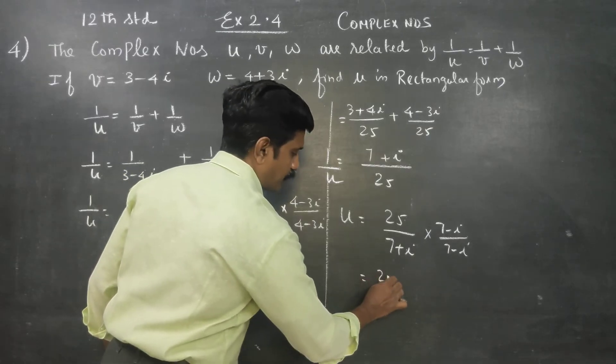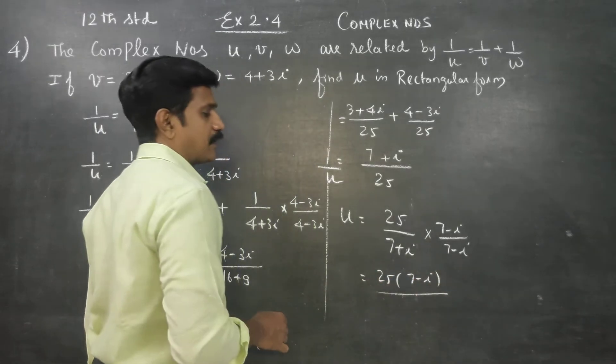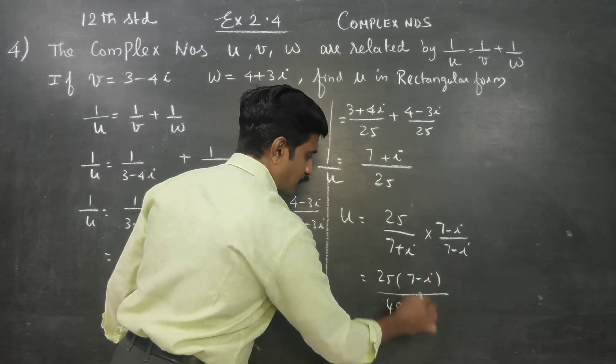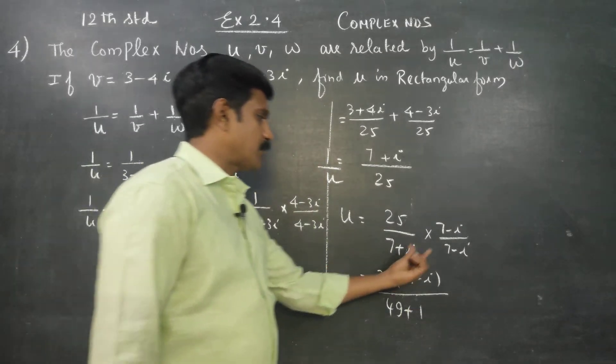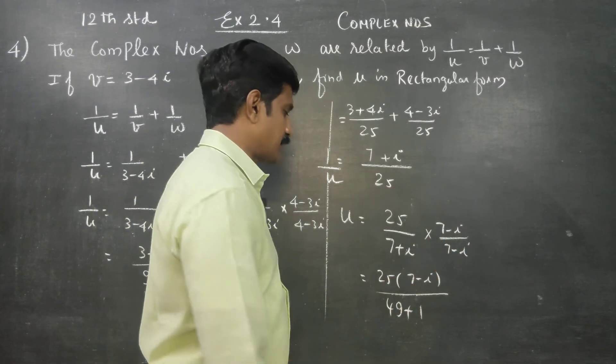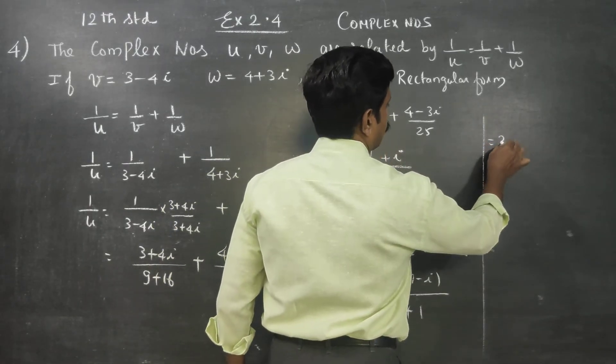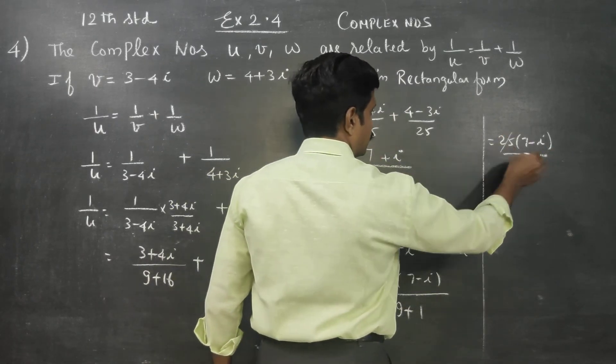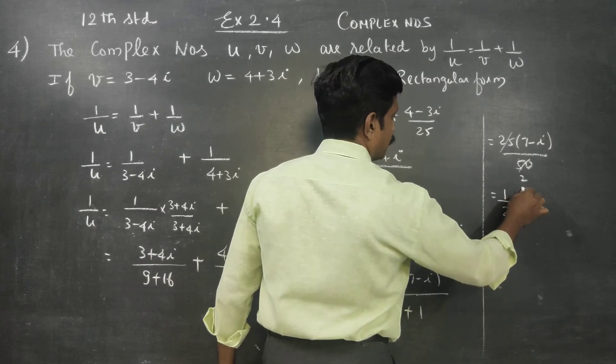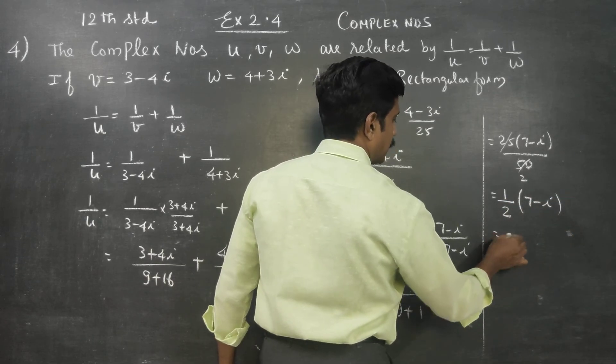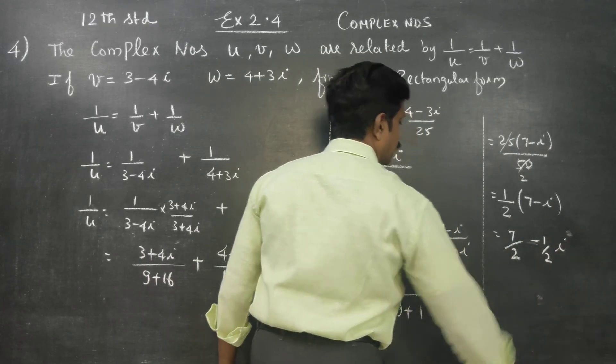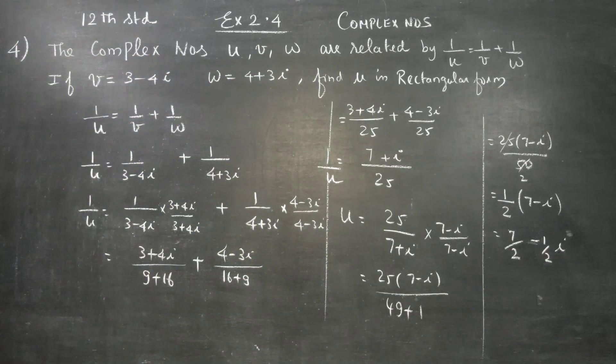We get 25 times 7 minus i. Using a square plus b square, 7 square is 49, 1 square is 1. Your answer will be 25(7 minus i) by 50. 25 cancels to give 1/2, so 7/2 minus i/2. This is called rectangular form or standard form or Cartesian form. Thank you.